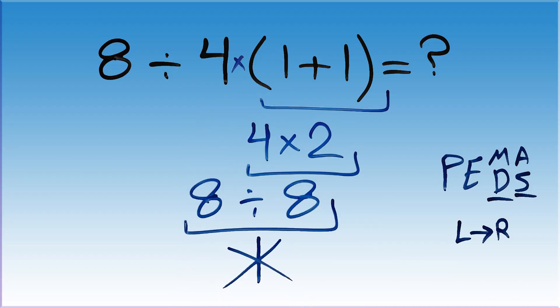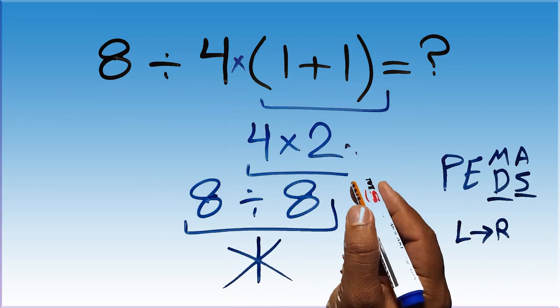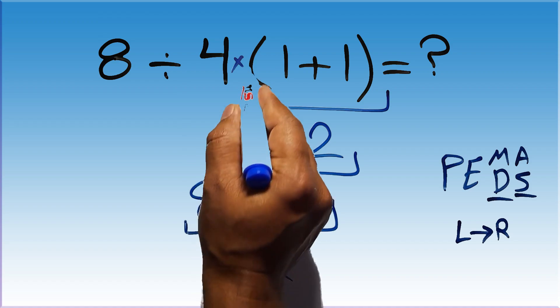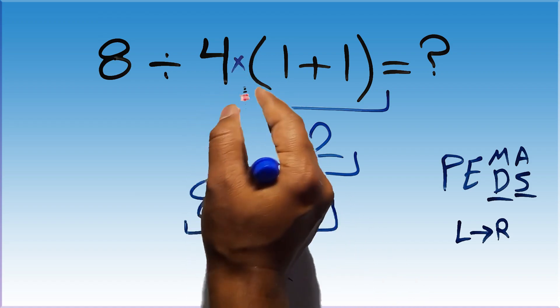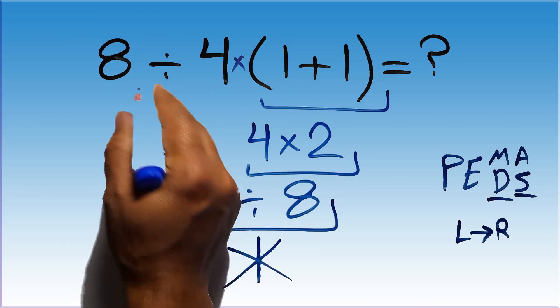Okay, so according to PEMDAS first we have to do this parentheses, then this division, and finally this multiplication. If we do this multiplication before this division it is wrong.